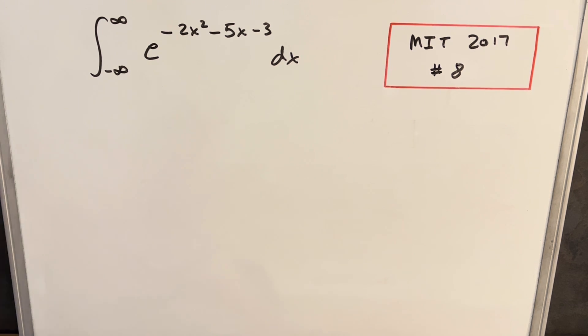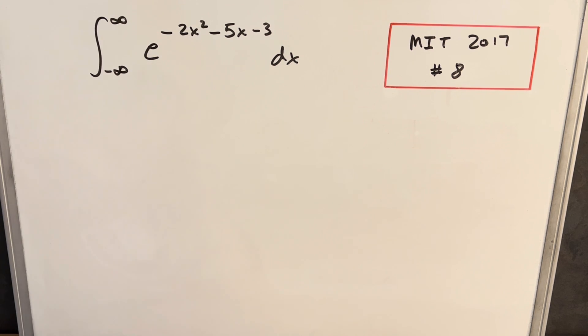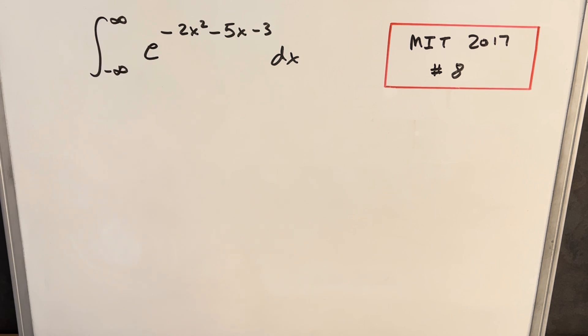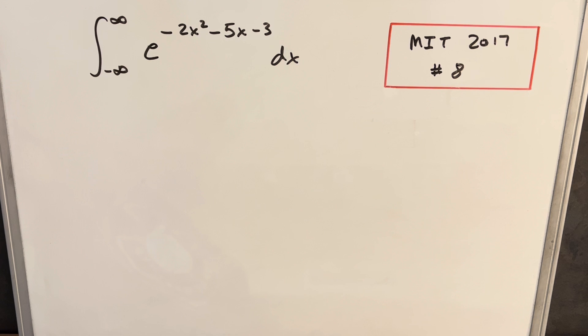One thing that's really sticking out to me is we got a complicated exponent here on our exponential, and especially though we have a power of two. If this was just a power of one, we could probably work with it with maybe just like a u substitution. But because we have a square term, this is making me think of the Gaussian integral.